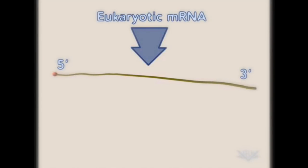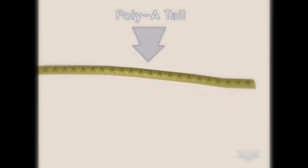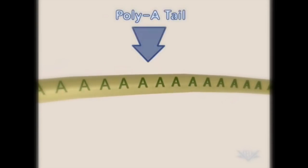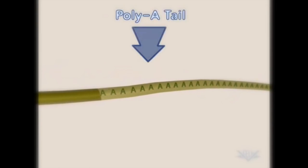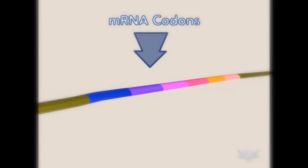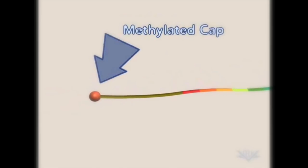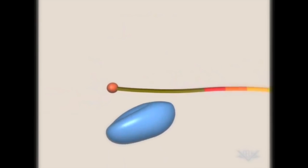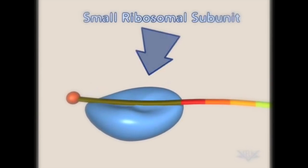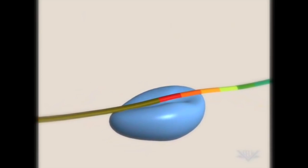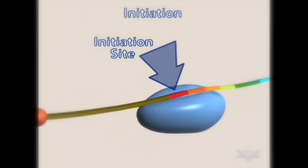Eukaryotic mRNA, the substrate for translation, has a unique 3' end called the poly-A tail. mRNA also contains codons that will encode for specific amino acids. A methylated cap is found at the 5' end. Translation initiation begins when the small subunit of the ribosome attaches to the cap and moves to the translation initiation site.